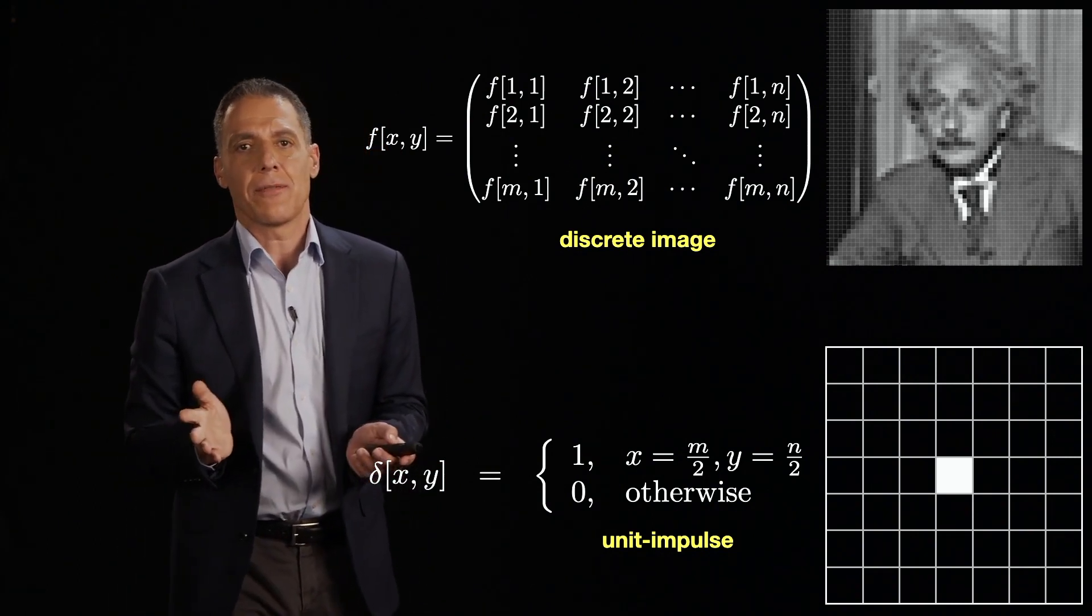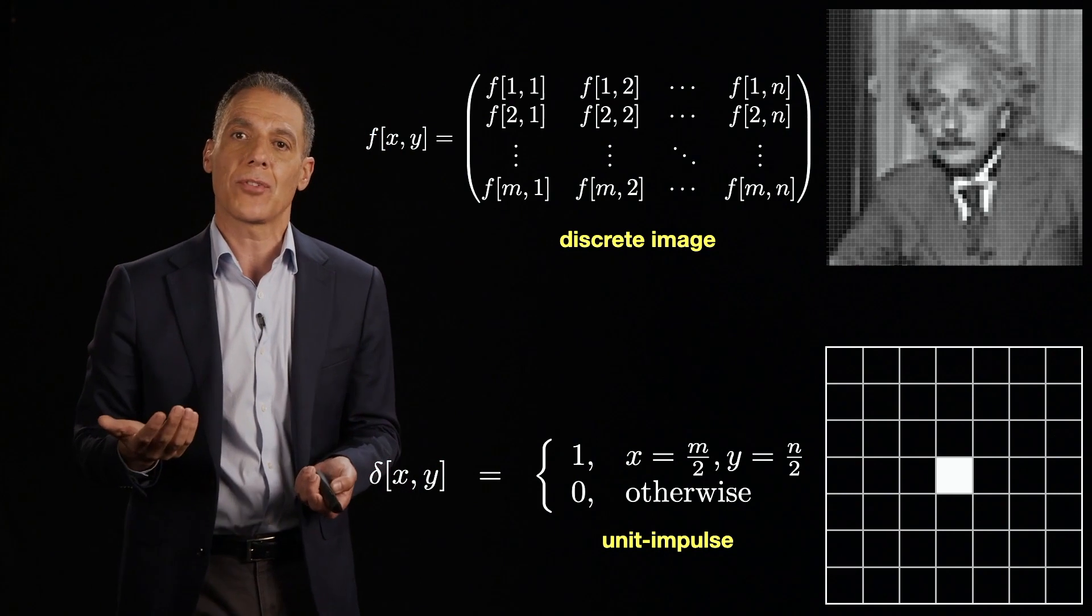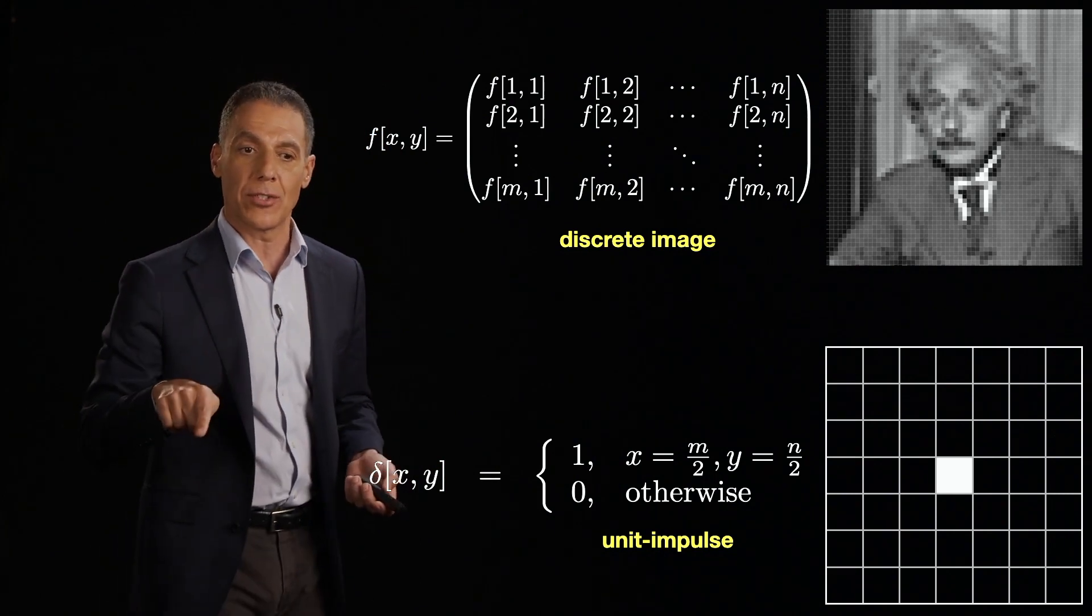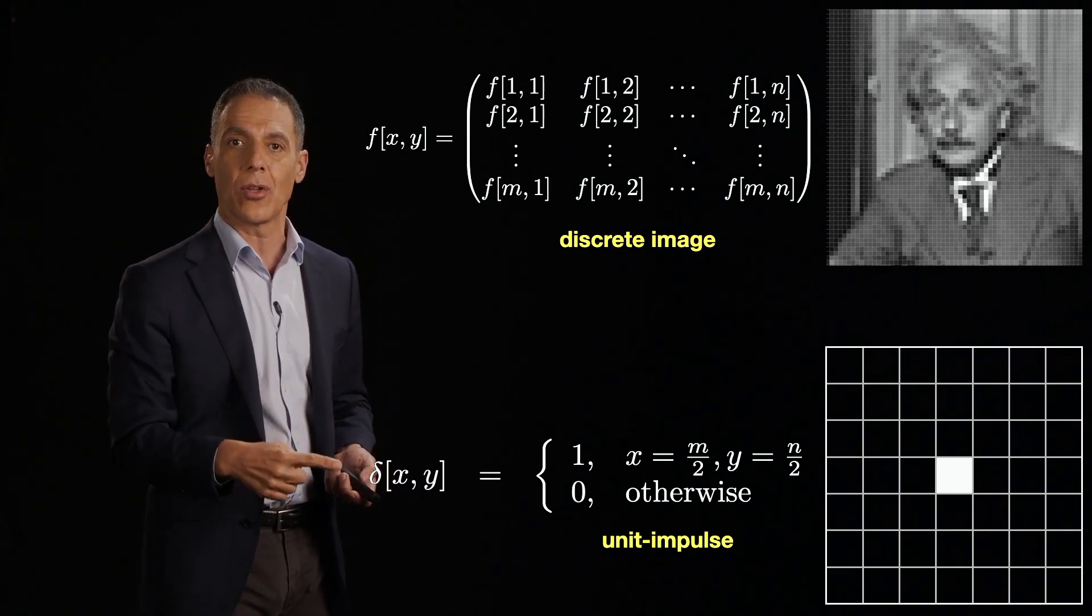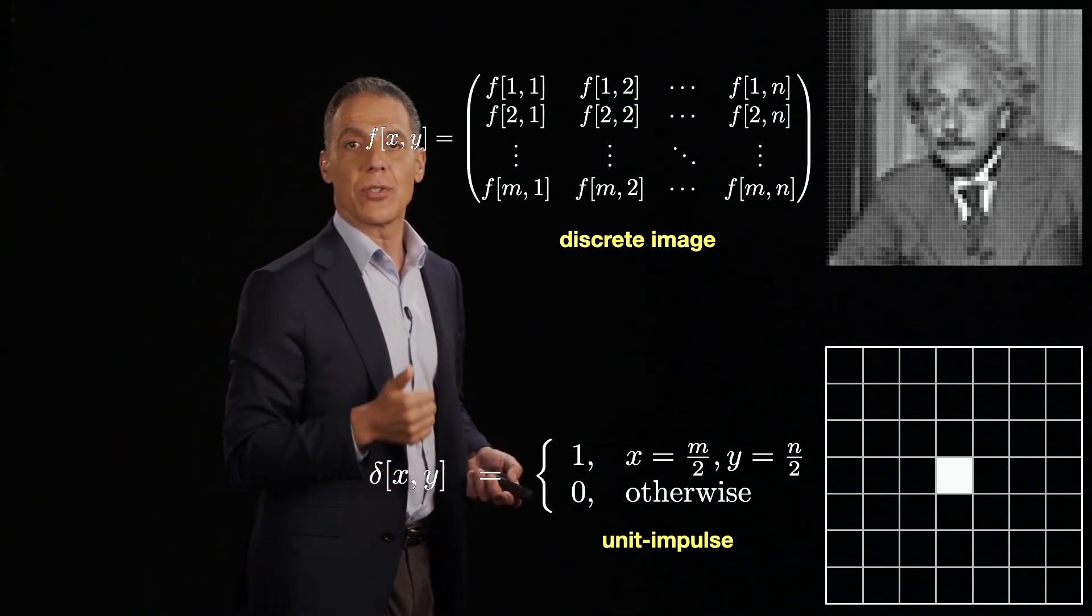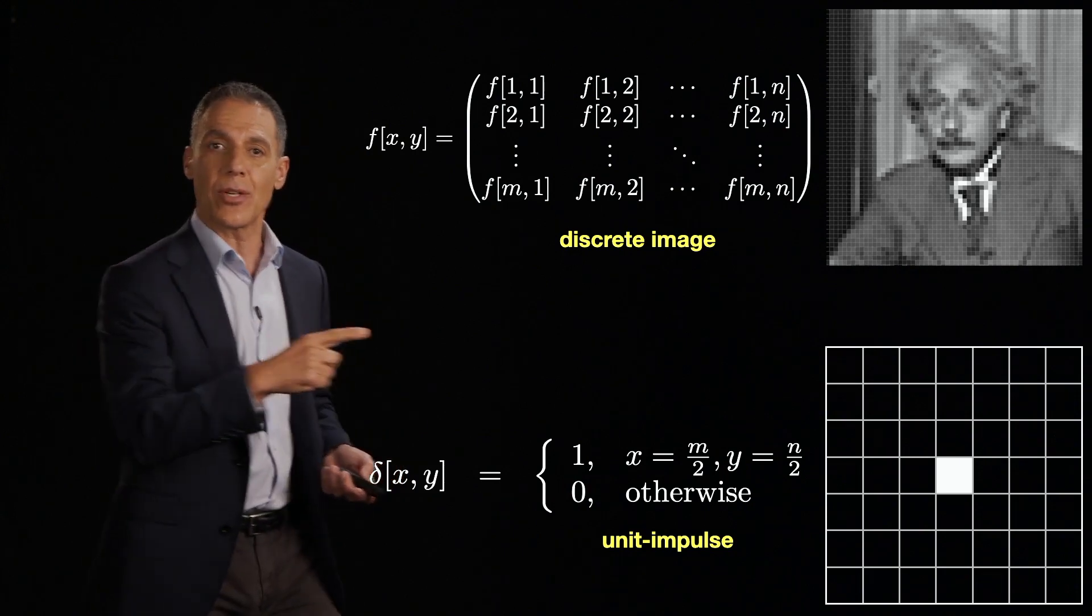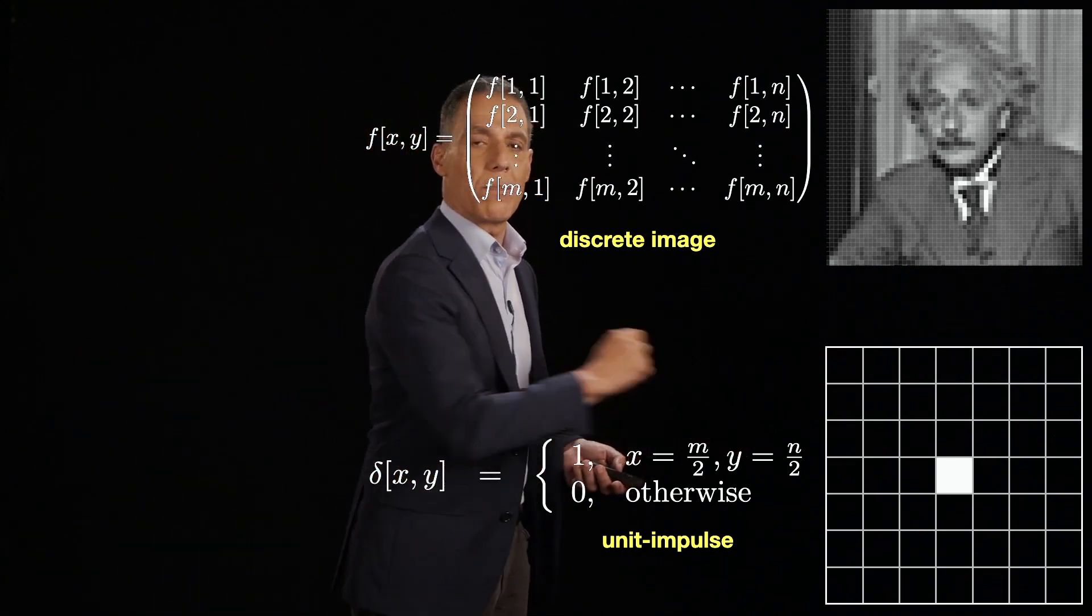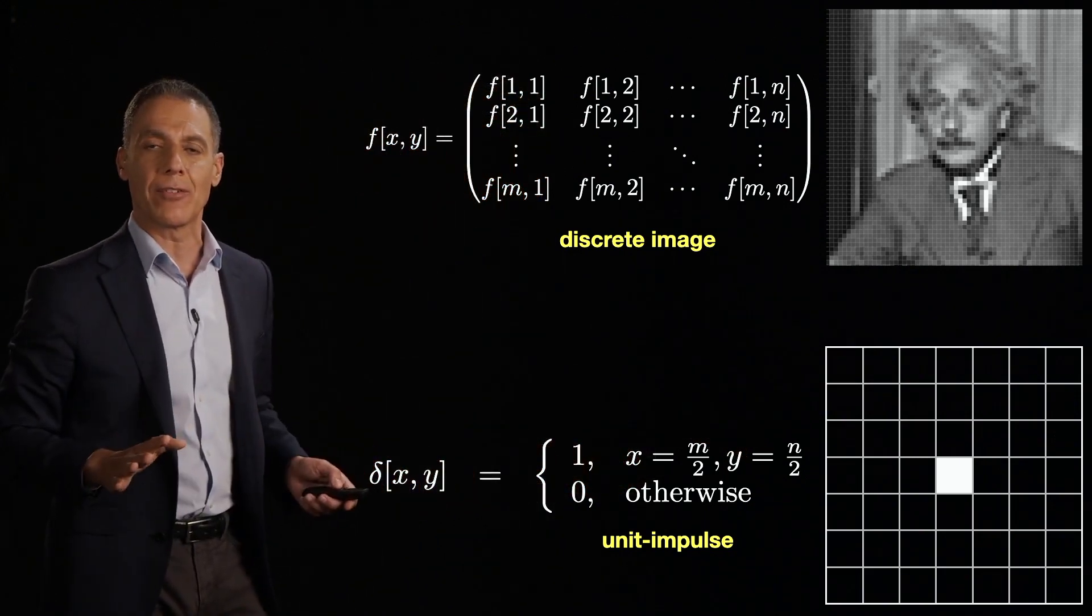We know we're going to need it, so let's go ahead and define it. We need the unit impulse. And so now the unit impulse is a two-dimensional signal. Delta of x,y is equal to 1 at the center of the image - there's that white pixel right there - and 0 everywhere else.